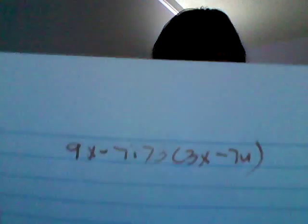The equation would look like this. The first step is to distribute the 3 into the parenthesis. So then it'll be 9x minus 7i is greater than 9x minus 21u.